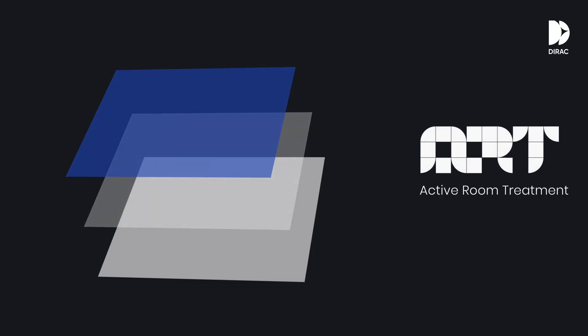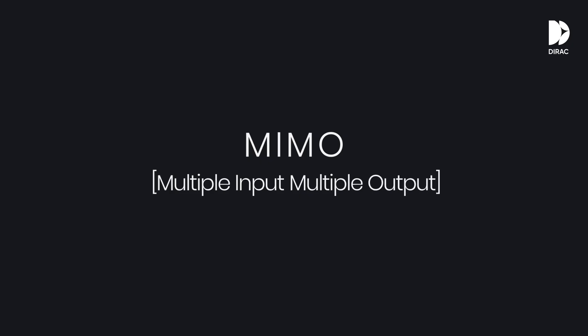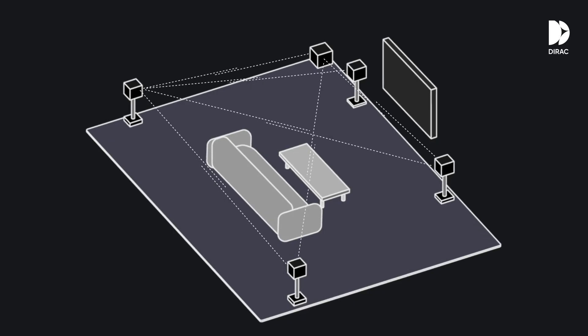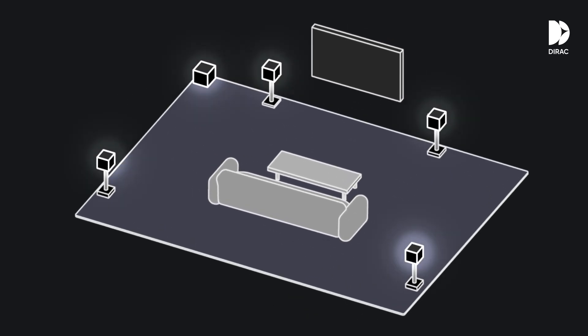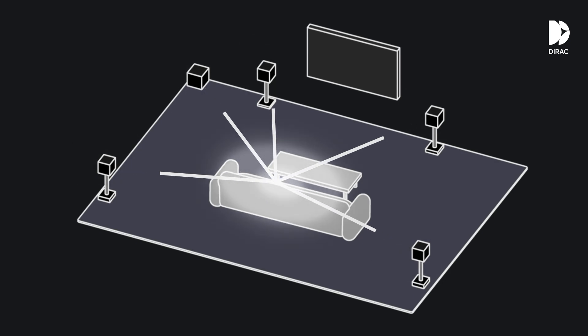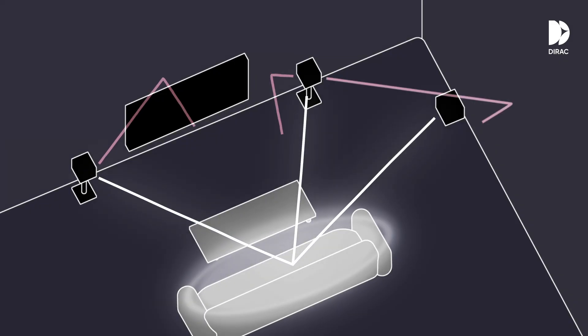That's where active room treatment steps in. What makes ART unique is it allows speakers to collaborate to further optimize your system. This approach uses MIMO filtering. With MIMO, ART views your speakers as one unified system. Instead of correcting each speaker in isolation, it adjusts them collectively to create a coherent, balanced sound across the entire listening area. Because the speakers are cooperating, they can help each other, sharing playback duties to counteract room reflections and resonances.